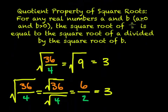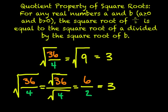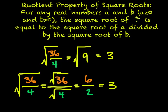Now let's learn the quotient property. Product dealt with multiplication; quotient deals with division. The quotient property of square roots states: for any real numbers a and b, where a is greater than zero and b is greater than zero (since we can't divide by zero), the square root of a divided by b is equal to the square root of a divided by the square root of b.